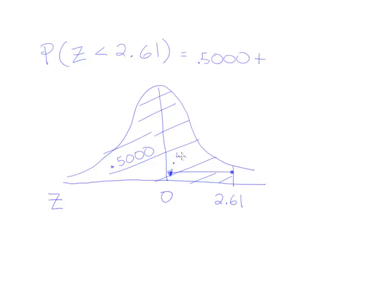So this area here is 0.4955. So we'll just add 0.4955 to 0.5, and we end up with the answer 0.9955, or 99.55%.